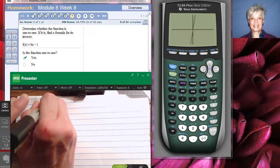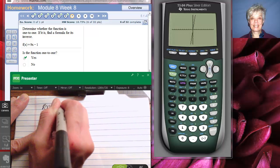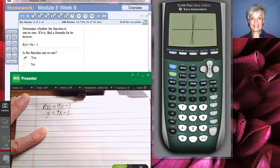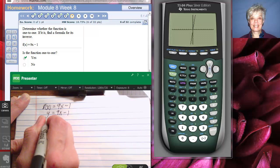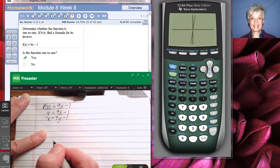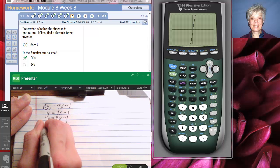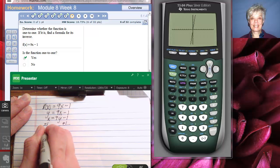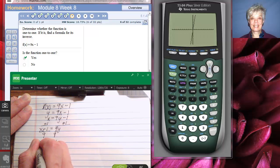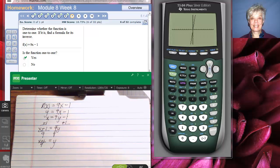We've got f of x equals 9x minus 1. Now, I'm going to say y equals 9x minus 1. Now, I'm going to switch the letters because remember, when you've got an inverse, the x coordinates and the y coordinates are interchanged. So I'll say x equals 9y minus 1. Now, I solve for y. I'll add 1 to both sides. So that I have x plus 1 equals 9y. And then to solve for y, I divide by 9. So, y equals x plus 1 over 9 is my inverse function.